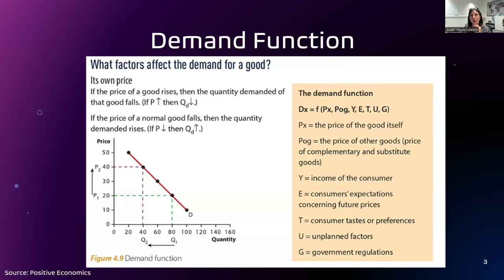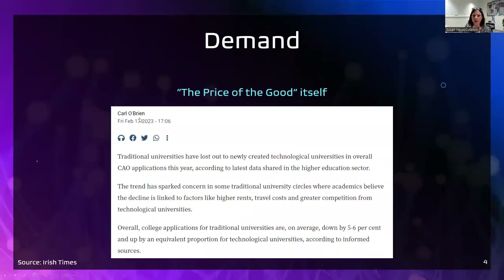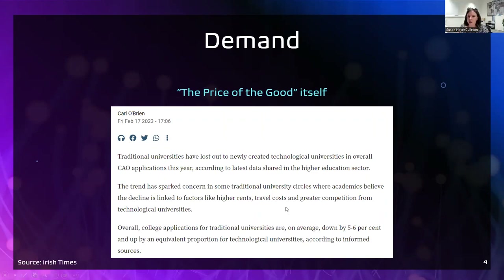Here's a piece from the Irish Times from three days ago - the 17th of February, last Friday. It says traditional universities have lost out to newly created technological universities in overall CAO applications this year, according to the latest data shared in the higher education sector. The trend has sparked concern in some traditional university circles where academics believe the decline is linked to factors like higher rents, travel costs, and greater competition from technological universities.